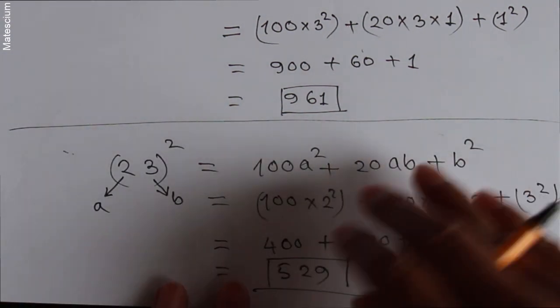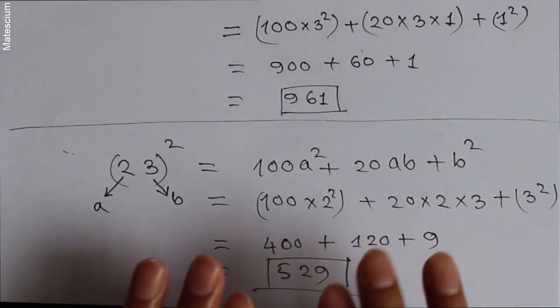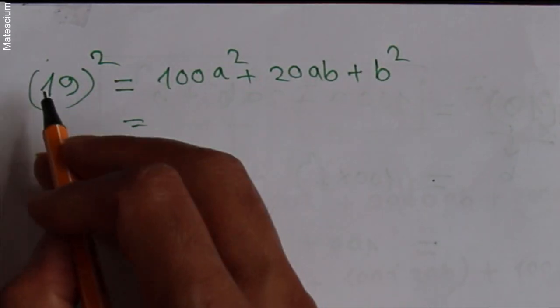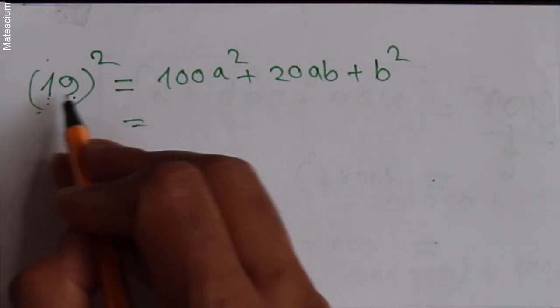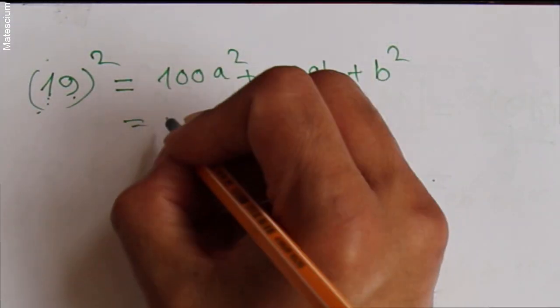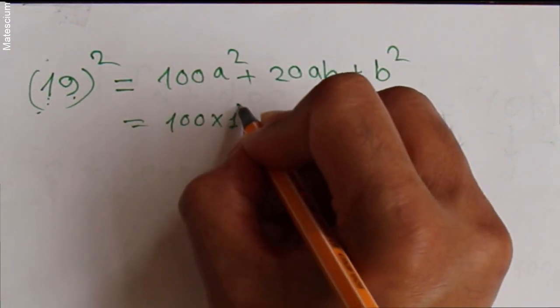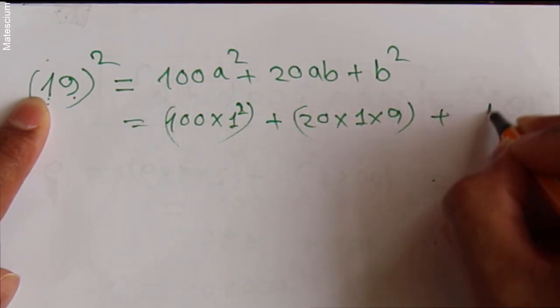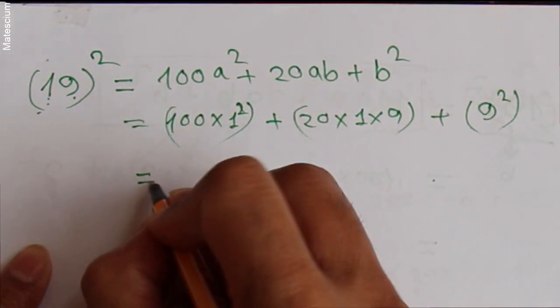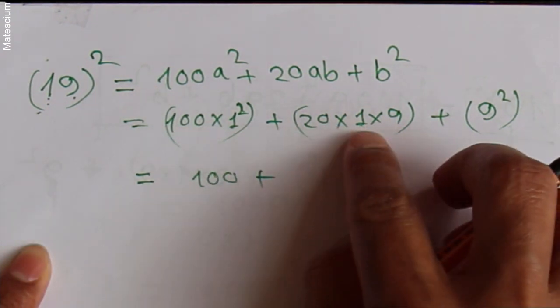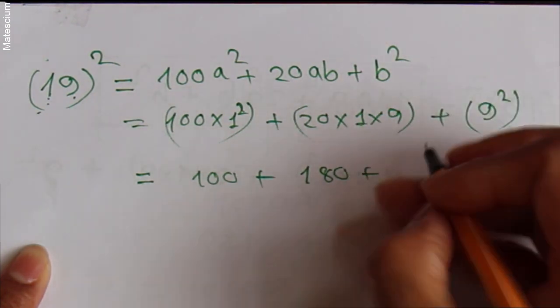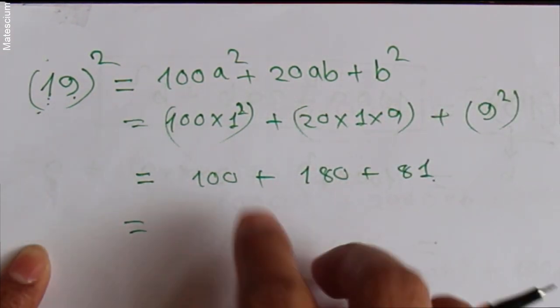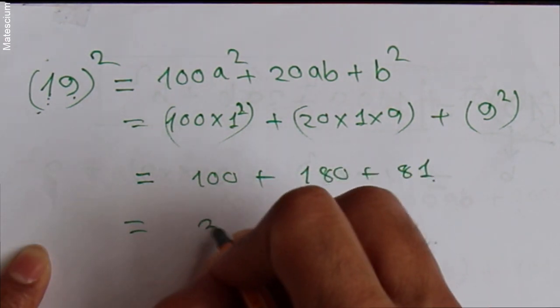Is it not very simple? If you just practice this 2 to 3 times, you can calculate it even within 5 seconds. Let's do another example — let's say 19 squared. We will find out the square value of 19 using the formula. Here, 1 means A and 9 means B. Replace these two numbers as A and B in the formula: 100 times 1 squared, plus 20 times 1 times 9, plus 9 squared. That gives us 100 plus 180 plus 81, which equals 361. This is the value of 19 squared.